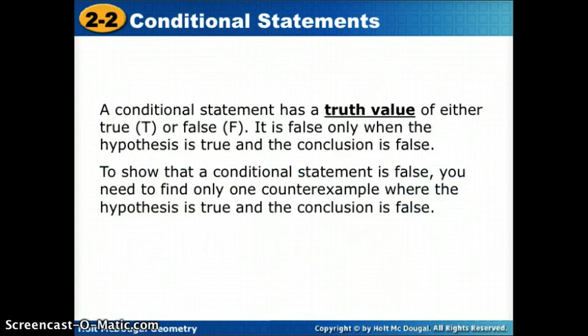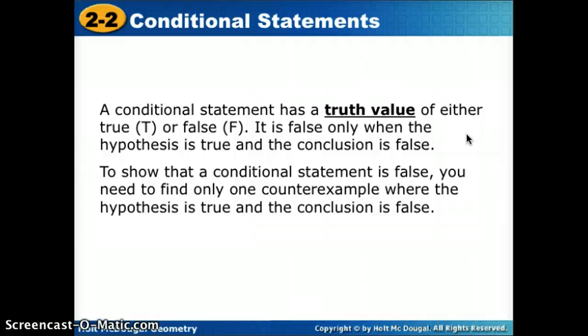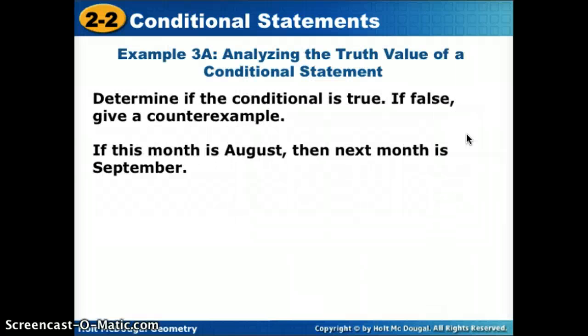Now we're going to look at truth values of conditional statements. A true statement has a truth value of true; a false statement has a truth value of false. For a conditional statement to be false, the hypothesis must be true and the conclusion must be false. If the hypothesis is false, the statement still has a truth value of true. To show a conditional is false, you need one counterexample where the hypothesis is true but the conclusion is not.